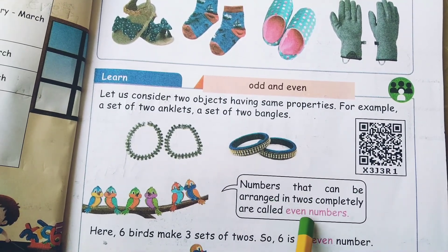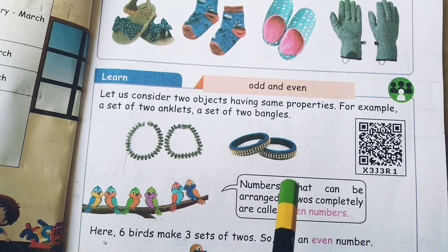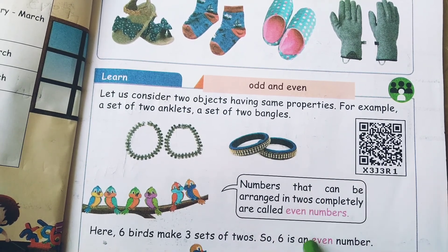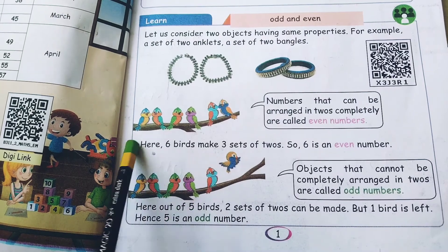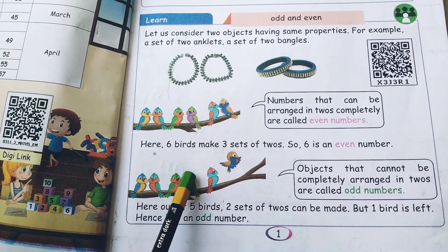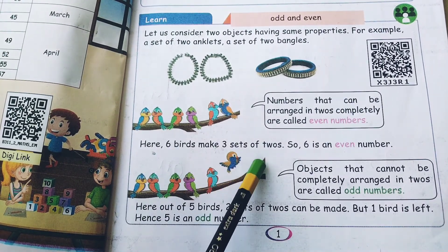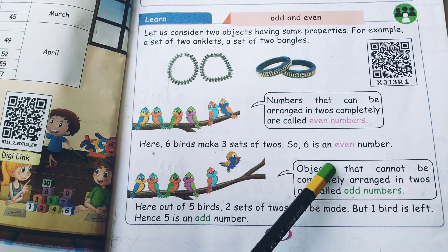Numbers that can be arranged in 2s completely are called even numbers. Here 6 birds make 3 sets of 2s, so 6 is an even number.